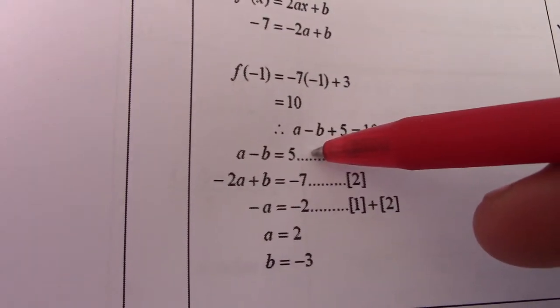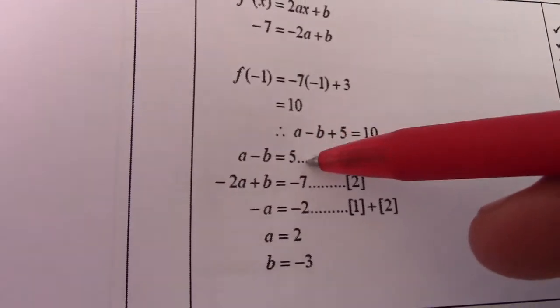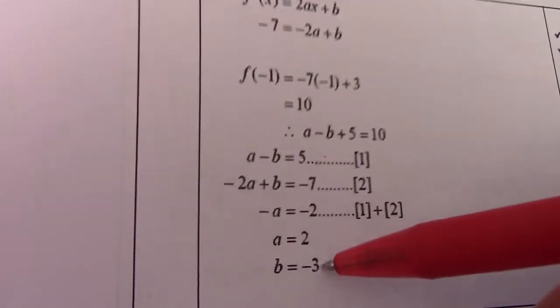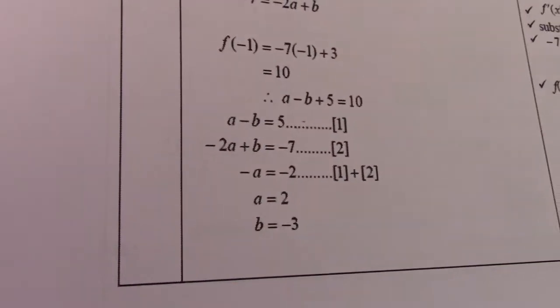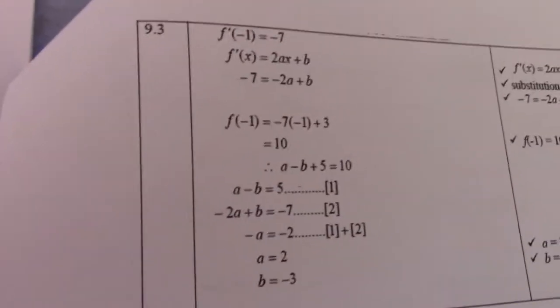So 5 - 2 gives me 3, and -b = 3 gives b = -3. So a = 2 and b = -3.